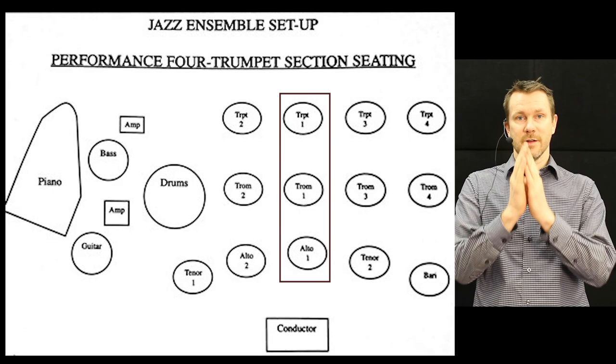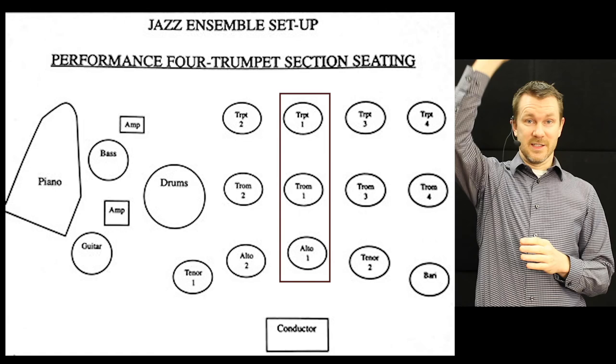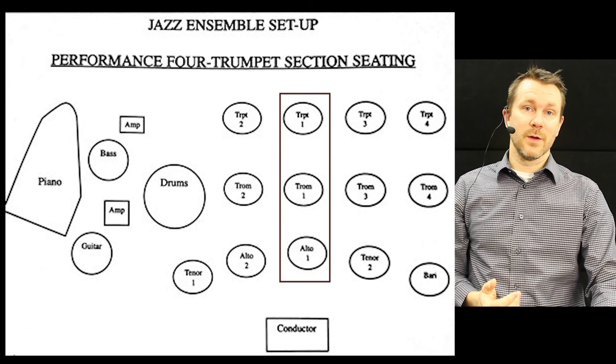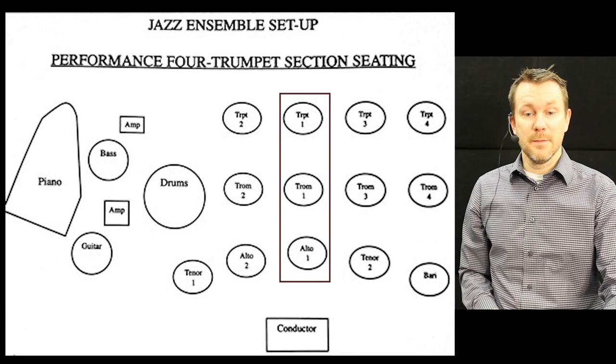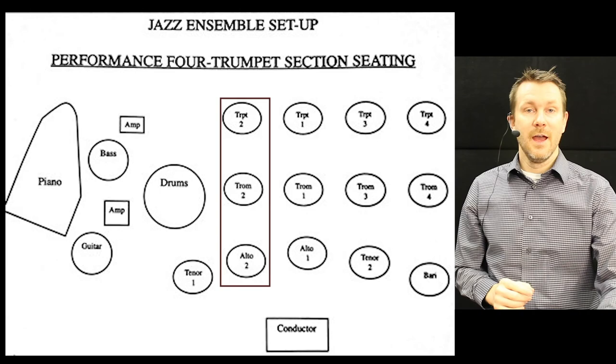the lead trumpet is not going to be able to hear lead trombone and lead alto very well. Lead trumpet also has the highest voice at that point and is going to be the loudest voice in the band. So lead alto and lead trombone needs to follow lead trumpet, and this makes it very easy. The audience is also hearing all the melody parts, the top melody parts, in a line.